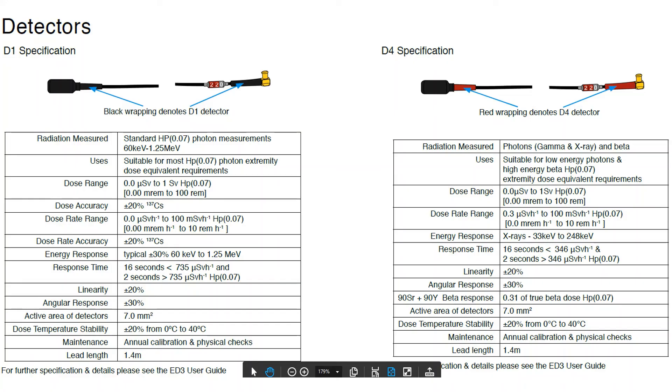This shows the difference between the D1 and D4 detectors. To start with, the D1 detector is wrapped in black at the beginning at the end of the lead, near the detector end and near the connector end, while the D4 detector has red. The D1 detector is able to measure photons starting around 60 keV upward, but is not able to measure betas. It has a much flatter energy response and stays within the IEC guidelines.